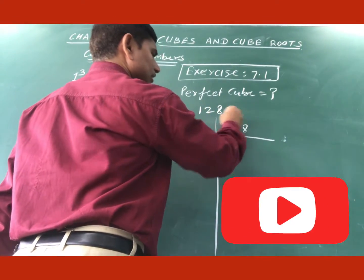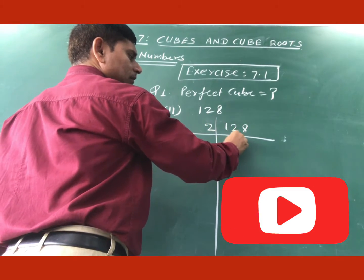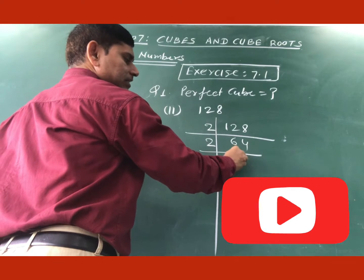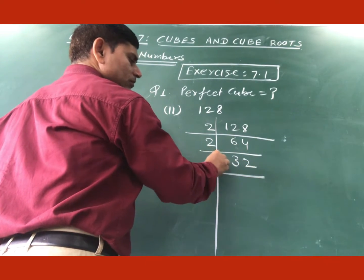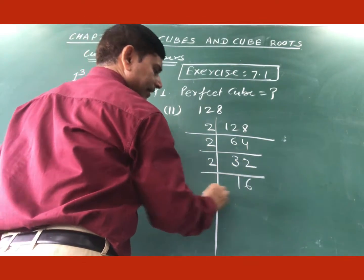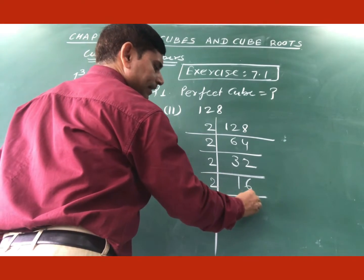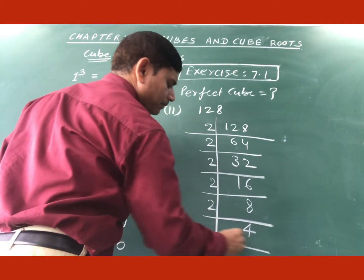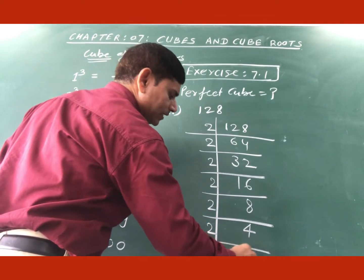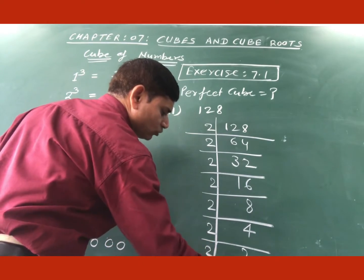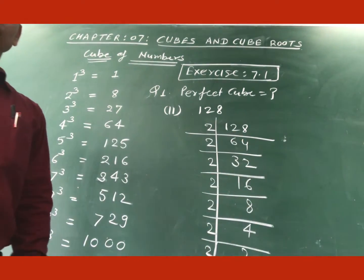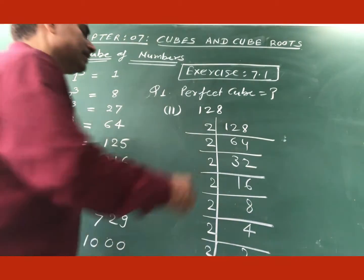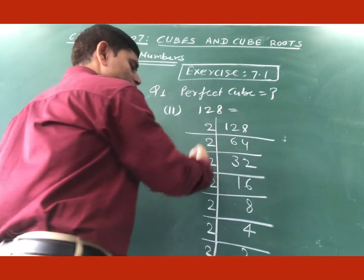Once again we will find the factor of this number, that is 128 divided by 2. And again by 2, this is 32. And again by 2, so it is 16. And again by 2, you will get 8. And again by 2, you will get 4. And once more 2, then you will get 2. And lastly you will write 2, then you will get 1.